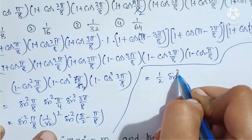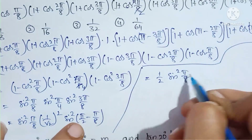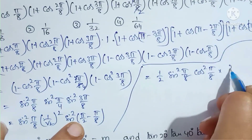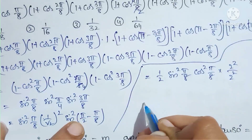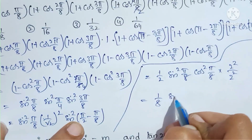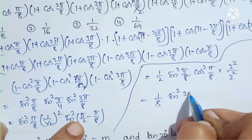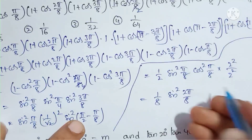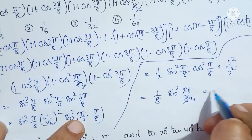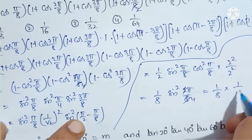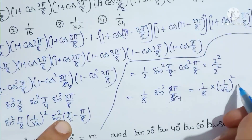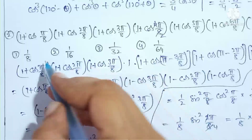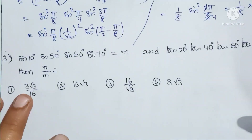So the expression becomes (1/2) × sin²(π/8) × cos²(π/8) = (1/8) × [2sin(π/8)cos(π/8)]² = (1/8) × sin²(π/4) = (1/8) × (1/√2)² = (1/8) × (1/2) = 1/16. That is option 2.